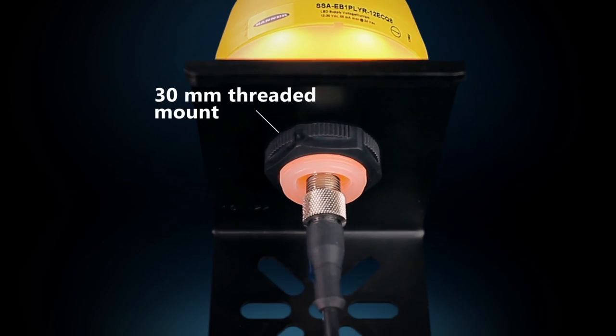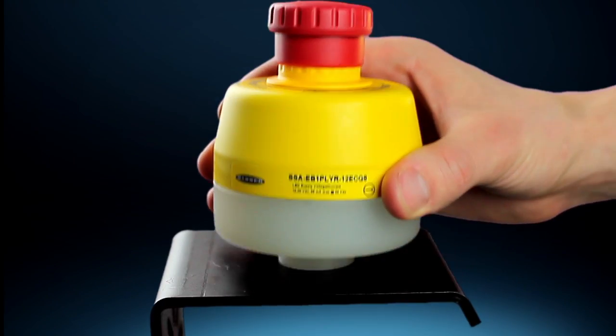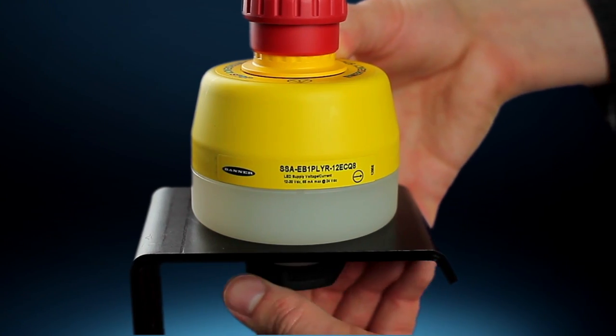The 30mm threaded mount enables a quick installation process. The robust all-in-one housing is ready to install out of the box, eliminating labor-intensive assembly and wiring.